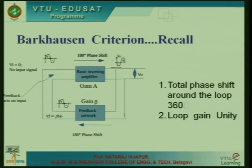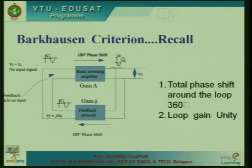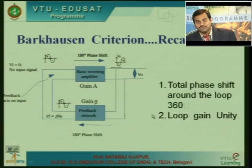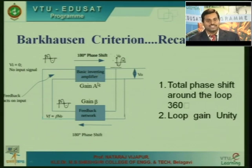To begin, let us revise the concepts of the oscillator. We discussed Barkhausen criteria. For any electronic system to act as an oscillator, Barkhausen criteria must be satisfied. It states that the total phase shift around the loop should be 360 degrees and the loop gain should be unity. The loop consists of an amplifier and a feedback network.